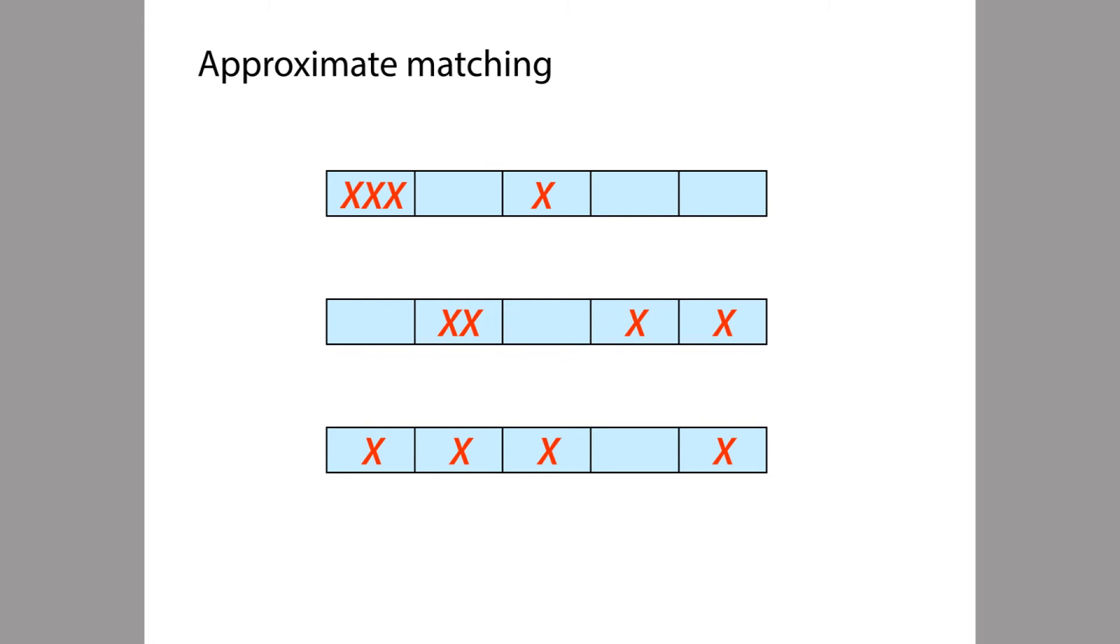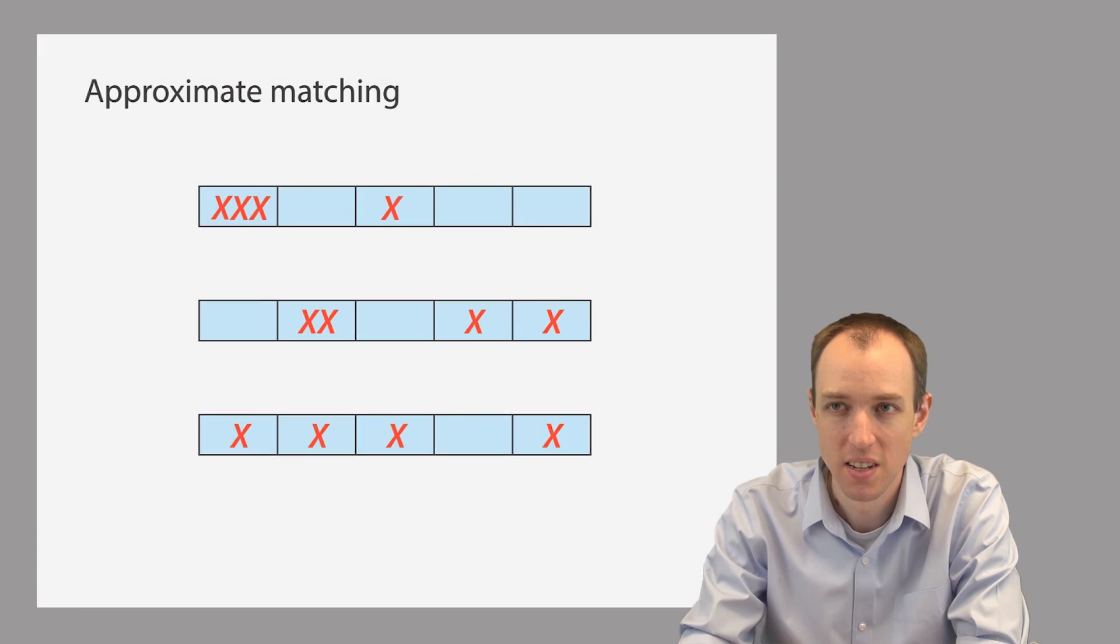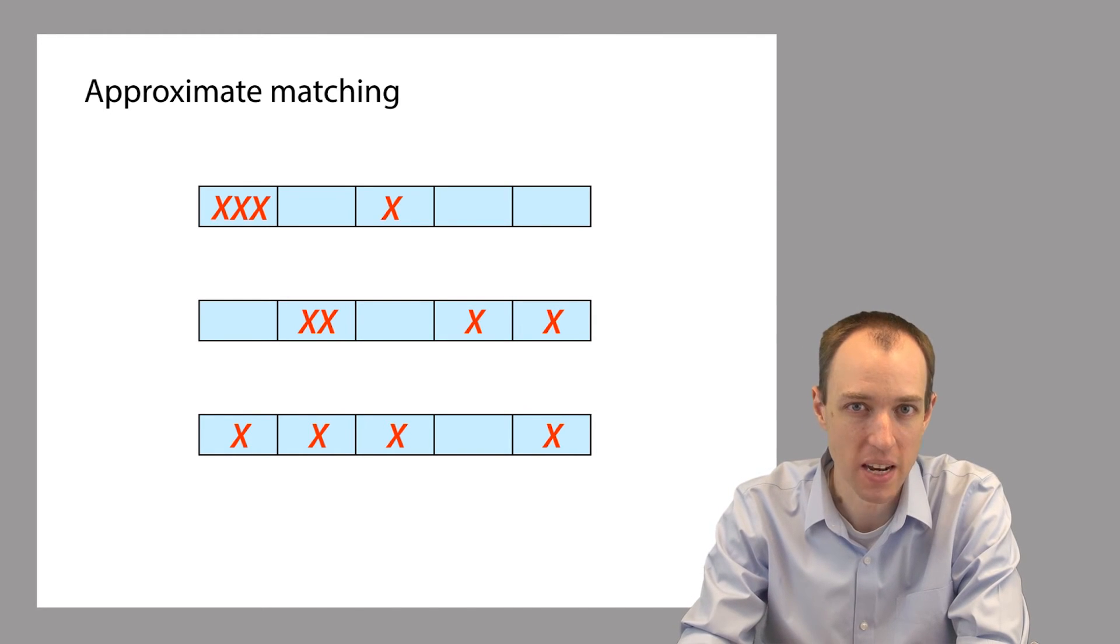The third case on the bottom is, in some sense, the worst case. It's the case where the edits are distributed as evenly as possible across the buckets. So in this case, the four edits are each in a different partition. But even so, because we have five partitions but only four edits, there's still one partition, the second from the right, that's not affected by any of the edits.